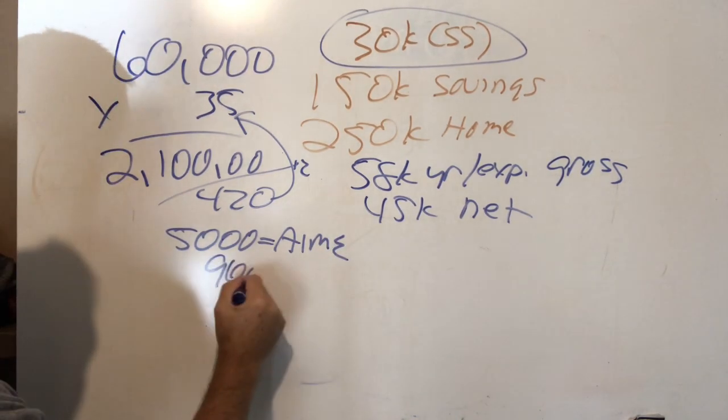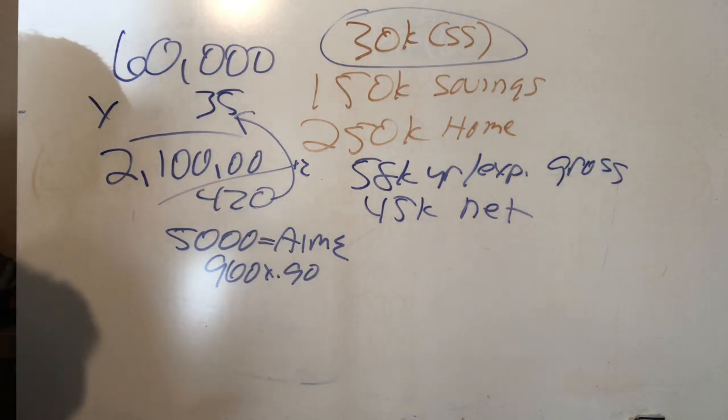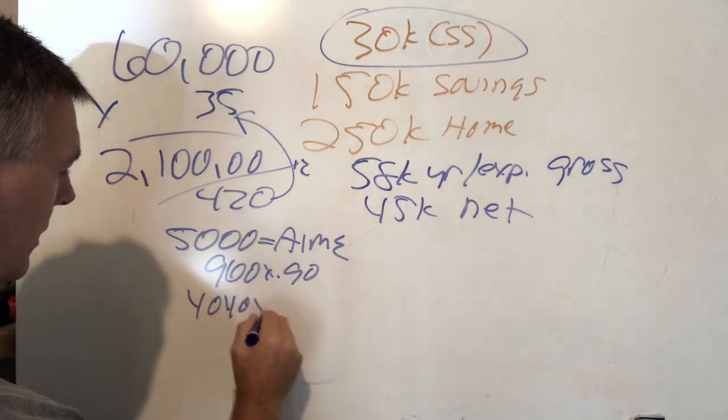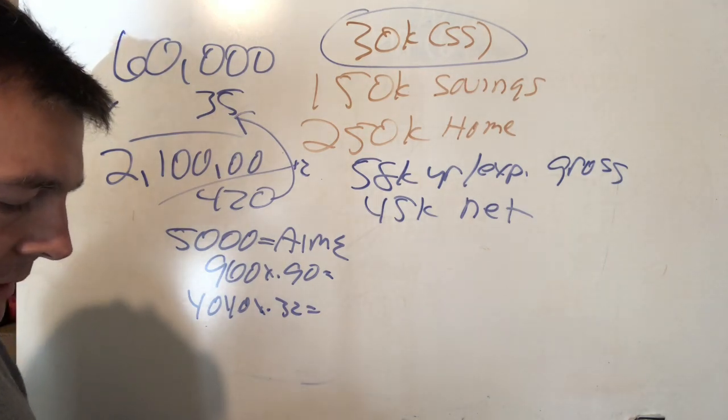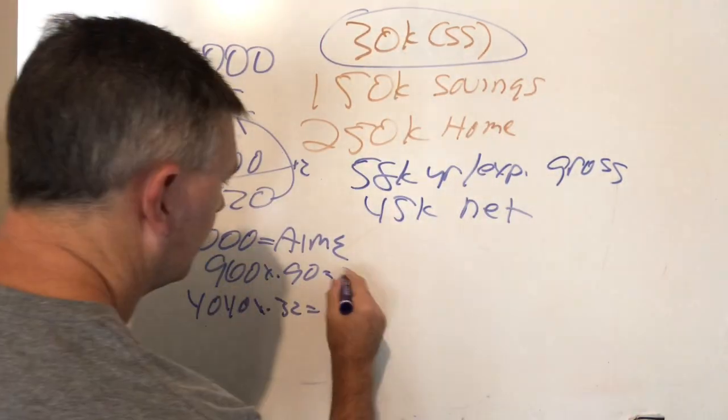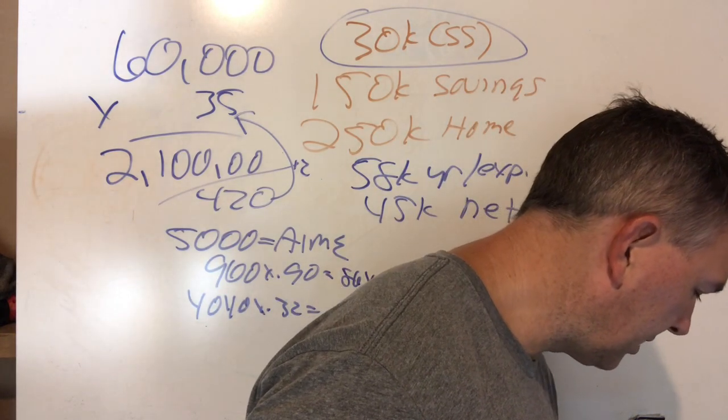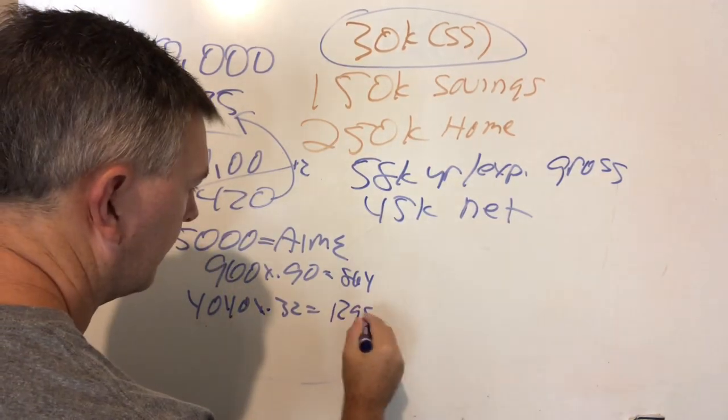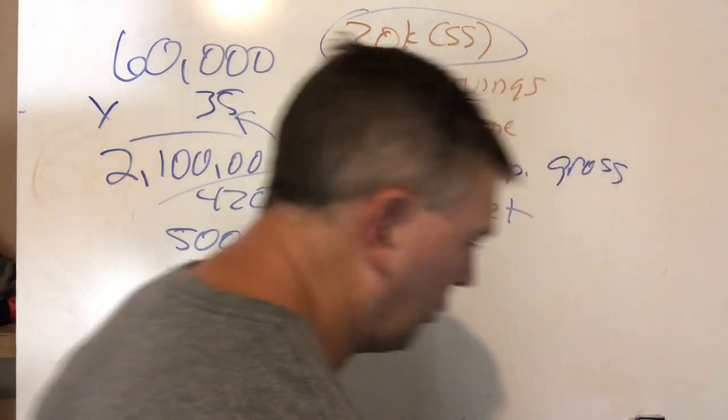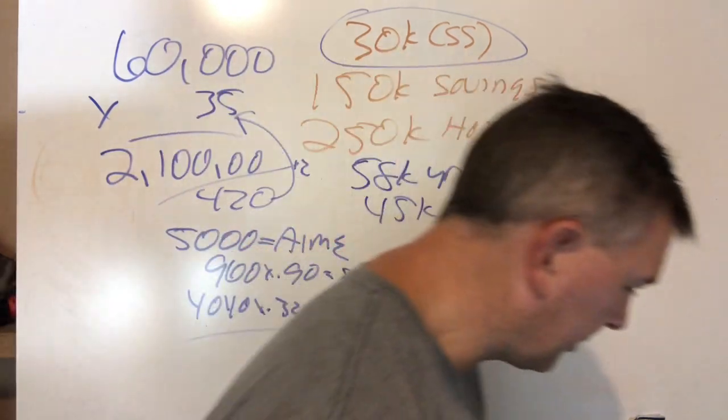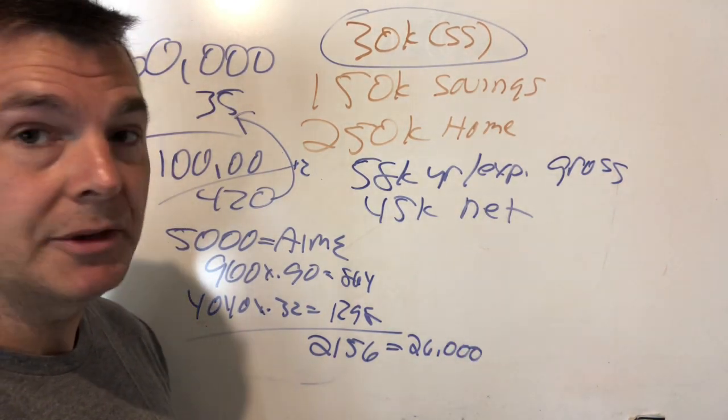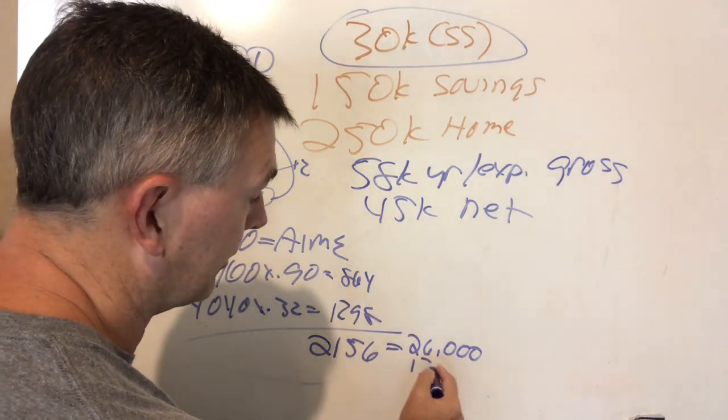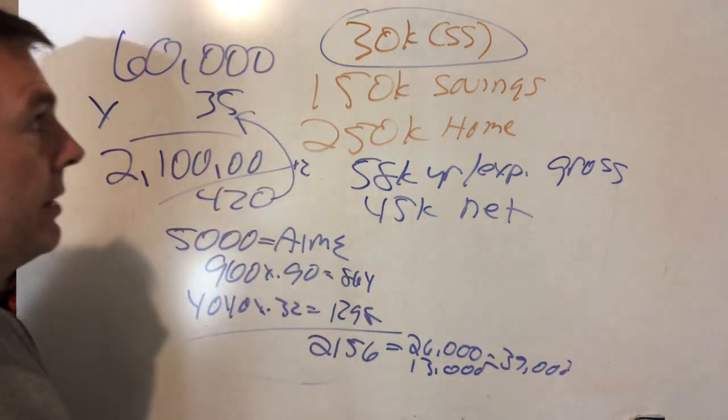Now we're going to divide that by 420 because there's 12 months and 35 years to get our PI, to get our average indexed monthly earnings. So we've got $2.1 million divided by 420, and that gives us $5,000 is our AIME, our average indexed monthly earnings. So the first $960 times that by 0.9, and then the remaining of that - $5,000 minus $960 is $4,040. So $4,040 would be times by 0.32. That's $864. And we've got $4,040 times 0.32 is $1,298. $1,298 plus $864 is $2,150. $2,156 times 12 is $25,872. Let's just say round up $26,000. And if the spouse didn't have any income on her own, we're going to have half that, so that's $13,000 - $39,000. So right there alone, we have more than what he's saying for Social Security.